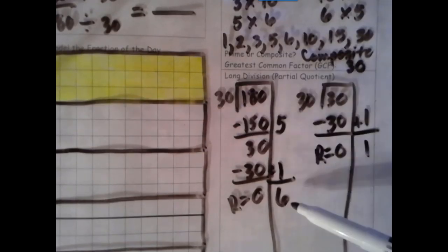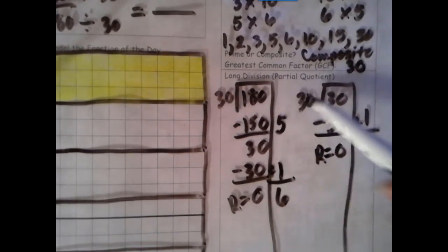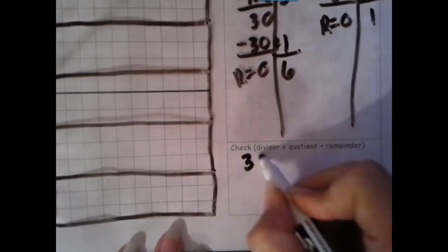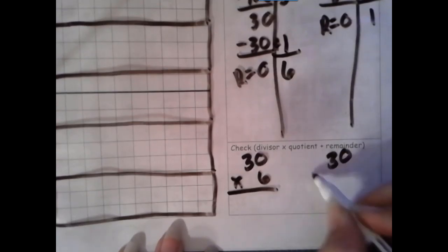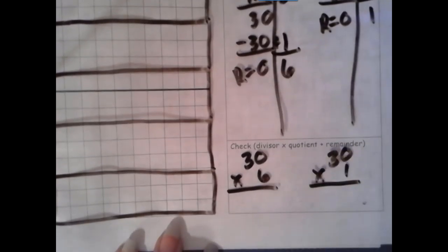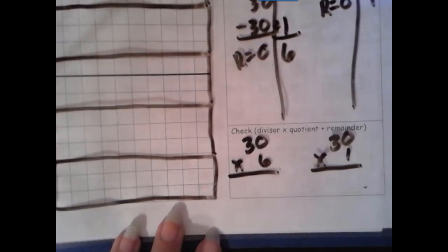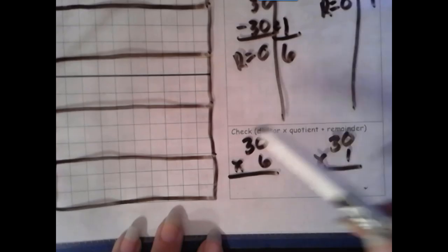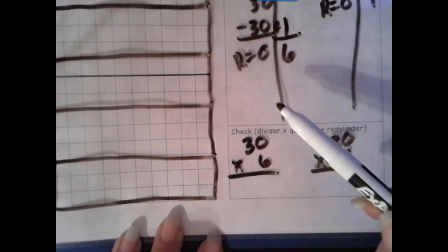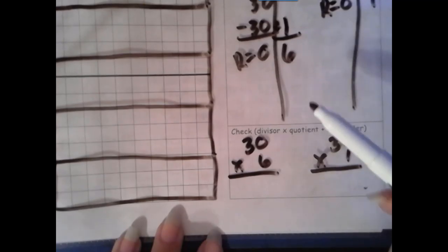Still need to check. Divisor times quotient plus remainder. Since my remainder for both is 0, and the identity property of addition says when you add 0 it stays the same, we don't need to add the 0. When we get into division in a few more weeks, our remainder will not always be 0. But when we're doing factors, they should be.